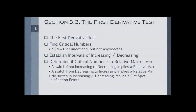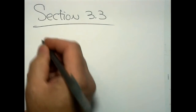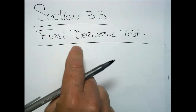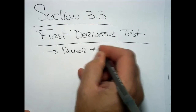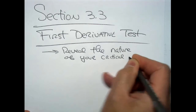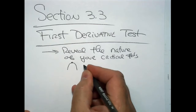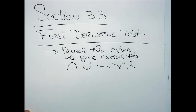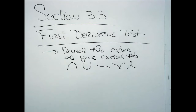Let's do that by example. But before we do, let's look at a diagram. This is section 3.3, and this part will be the first derivative test. The goal of the first derivative test is to reveal the nature of your critical numbers: hills, valleys, flat spots, or sharp corners. These are what you'll find at critical numbers — the first derivative test will tell us which one.